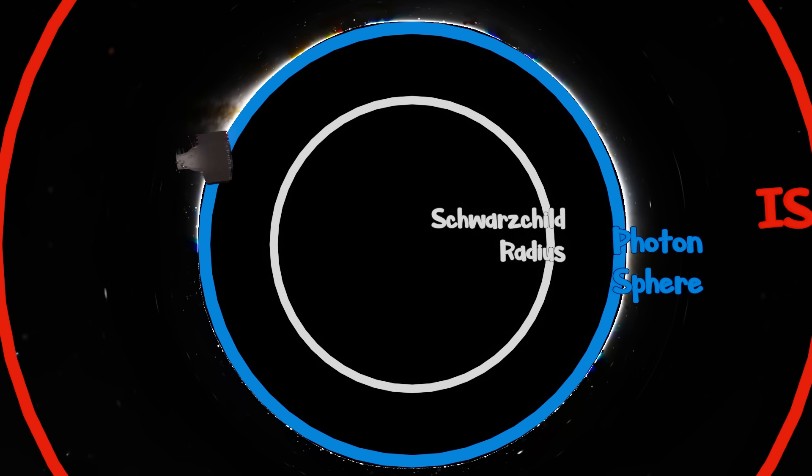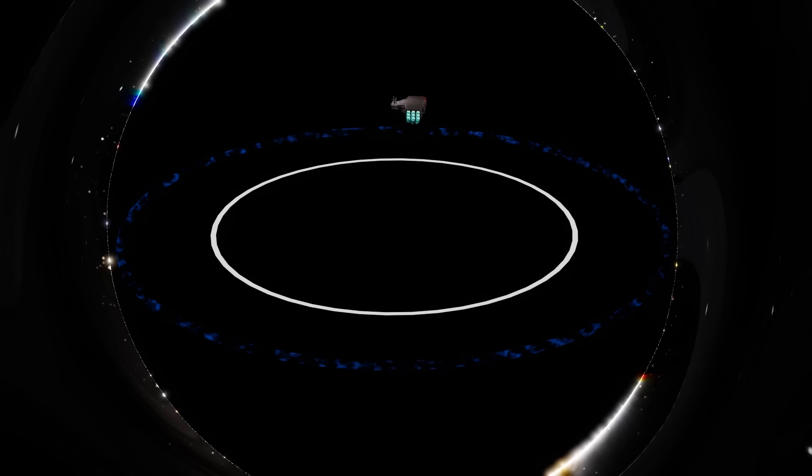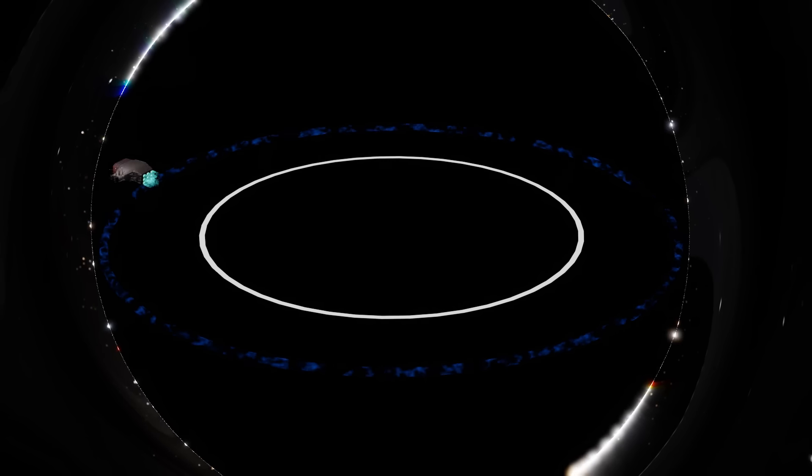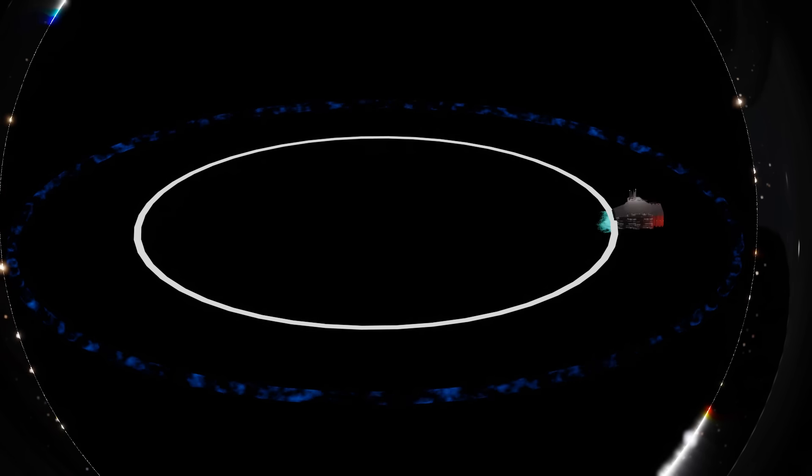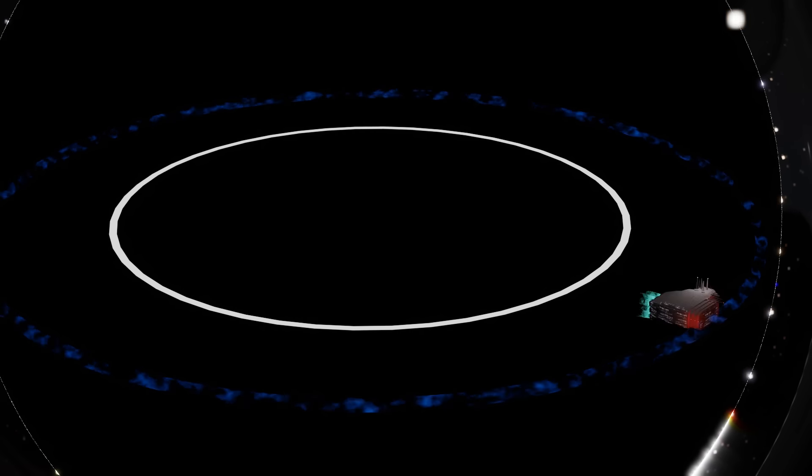If energy wasn't a constraint, we could orbit just above 1.5 Schwarzschild radii from the singularity, traveling at almost the speed of light. For something moving at the speed of light, like a photon, it can orbit at this distance. But this orbit is also unstable and any perturbation will cause the photon to spiral into the black hole or out into the cosmos. You can imagine that if light can only orbit 1.5 radii away, then it would take a tremendous amount of energy and force for a spaceship to get close to and then move away from the event horizon.